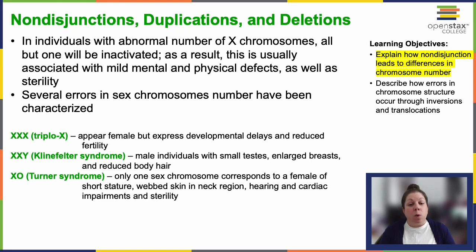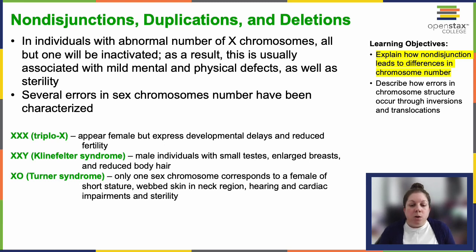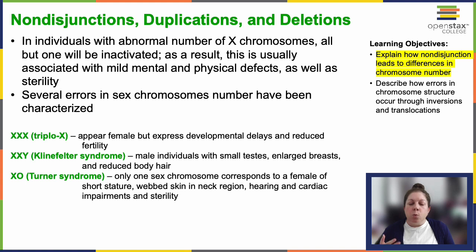XXY is referred to as Klinefelter syndrome. Individuals are male with small testes, enlarged breasts, and reduced body hair. The extra X chromosome undergoes inactivation to balance genetic dosage, but the Y chromosome is present, producing this mixture of traits. Turner syndrome involves a single X chromosome — you're missing one X you should have. These individuals are female, exhibit short stature, something called neck webbing, and often have hearing and cardiac issues. These individuals are sterile.